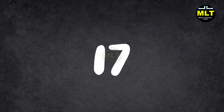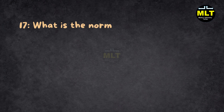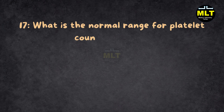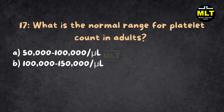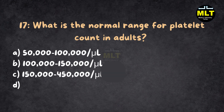MCQ 17. What is the normal range for platelet count in adults? A. 50,000–100,000 per microliter. B. 100,000–150,000 per microliter. C. 150,000–450,000 per microliter. D. 500,000–750,000 per microliter.